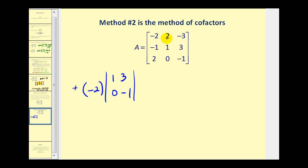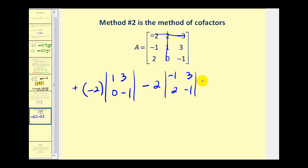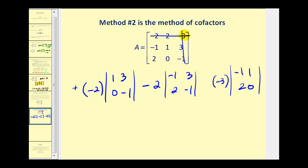Working across row one, the next element is in row one, column two. We eliminate row one and column two, giving element two times the determinant: negative one, three, two, negative one. Since one plus two is three, which is odd, we subtract this product. The last element in row one is negative three, times the determinant formed by deleting its row and column: negative one, one, two, zero. Since one plus three equals four, which is even, we add this product. If we always use the first row, the signs will be plus, minus, plus.